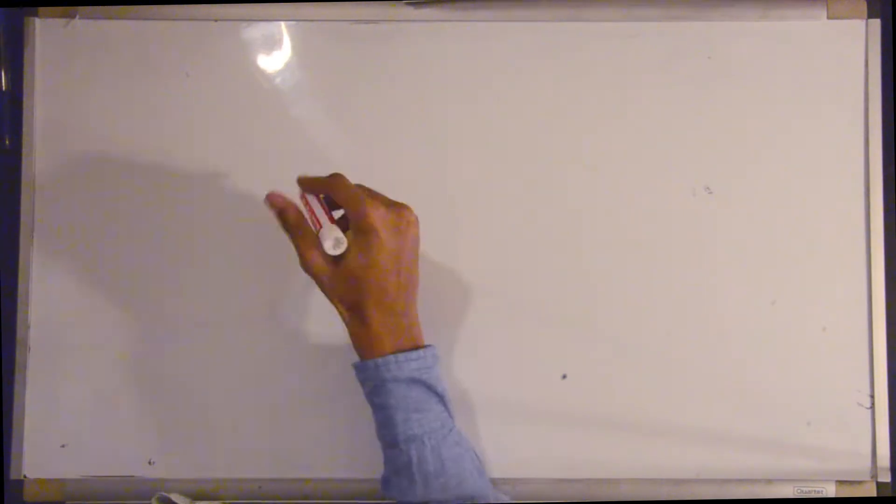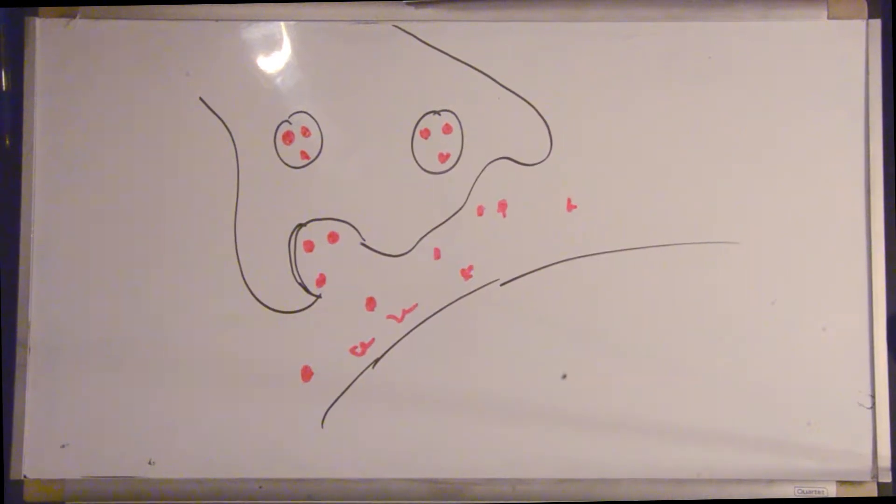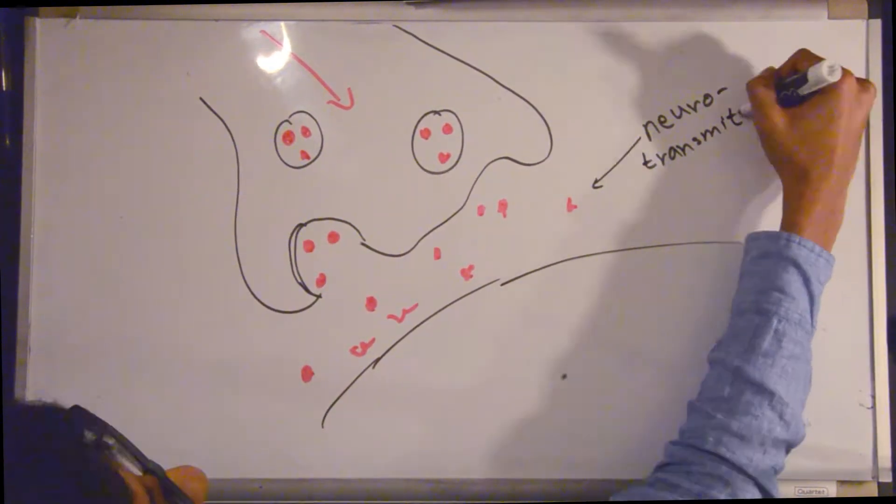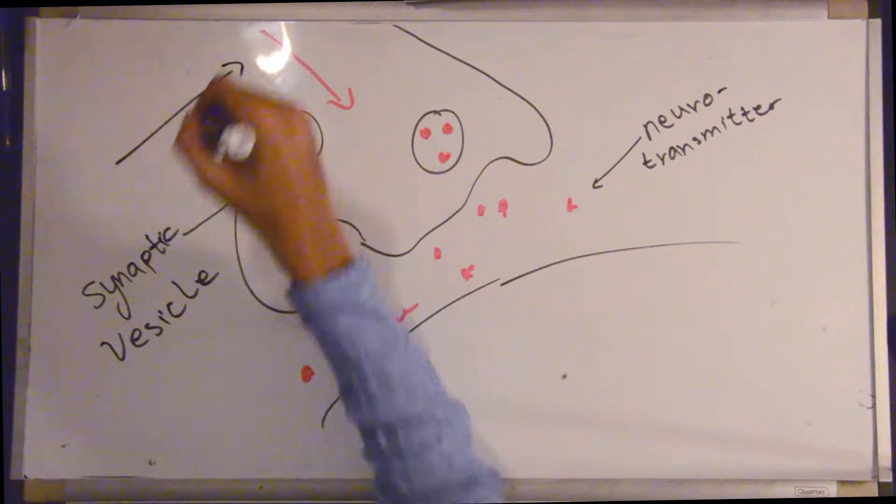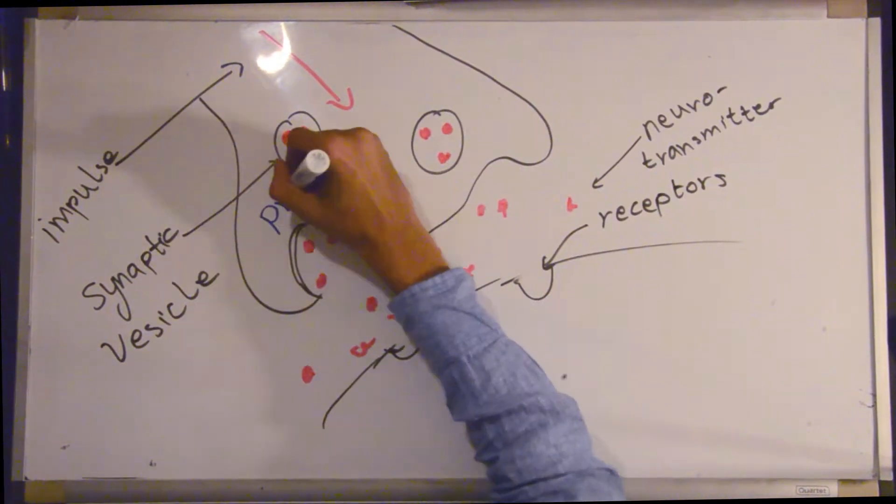Action potential causes vesicles to fuse with the presynaptic membrane and release their neurotransmitter molecules into the synapse. Released neurotransmitter molecules bind with the autoreceptors and inhibit subsequent neurotransmitter release. Released neurotransmitter molecules bind to postsynaptic receptors, and released neurotransmitter molecules are deactivated either by reuptake or enzymatic degradation.